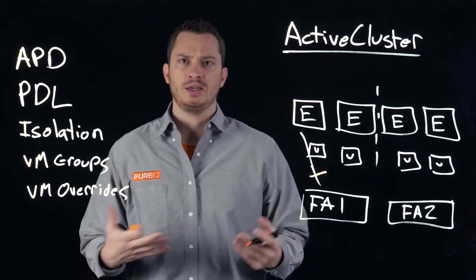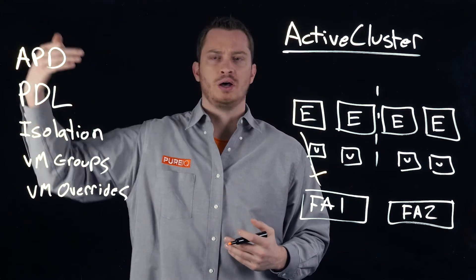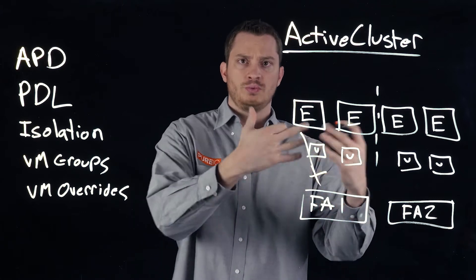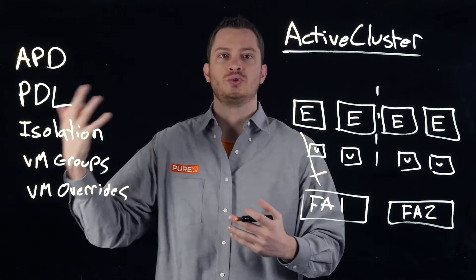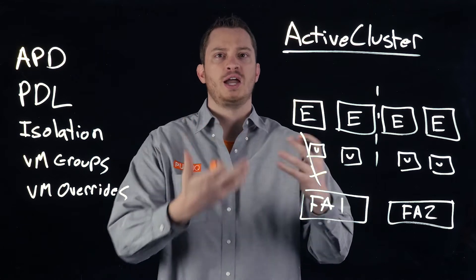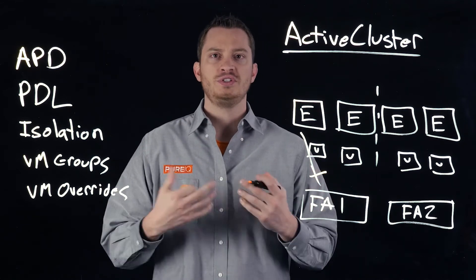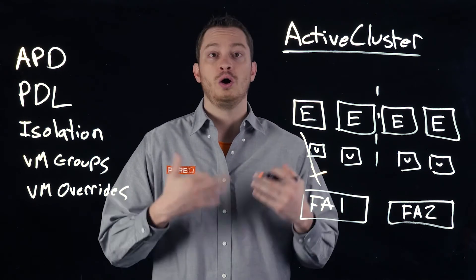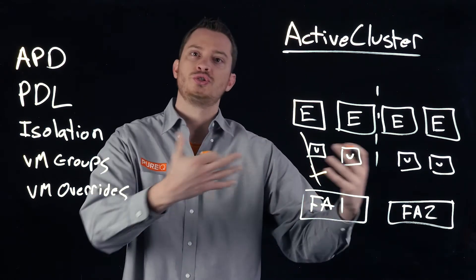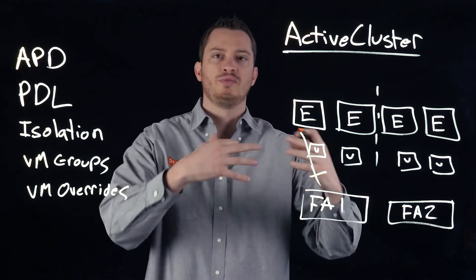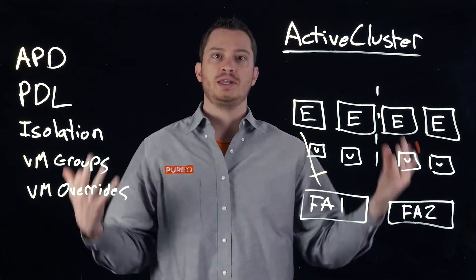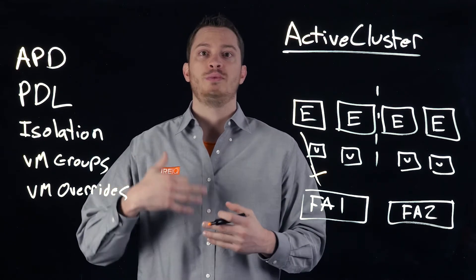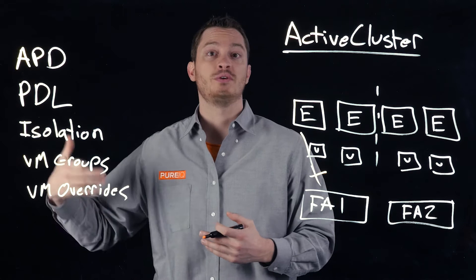vSphere HA can respond to a variety of failures, but they all are based on usually one of these three situations: an array failure, a switch failure, an administrative change that causes storage to go away, or some type of host failure. vSphere HA will automatically restart those virtual machines on another host — a host that has access to the resources. This is where stretched storage really helps, because it can provide access to that storage across data centers, giving you more resiliency and giving vSphere HA more options to respond to more types of failure scenarios.